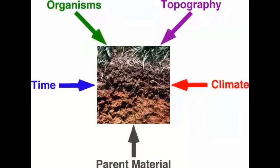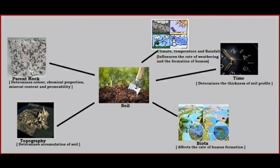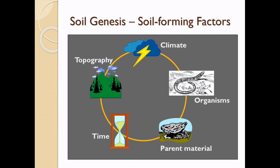Stage one: bare rock begins to break up near the surface as a result of weathering. The softened and loose rock mixture formed on the bedrock is called regolith. Stage two: the organic layer develops — bacteria and other microorganisms act on the remains of plants and organic material, forming humus and releasing minerals vital to plant growth.